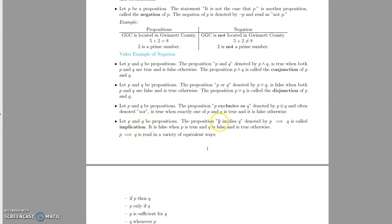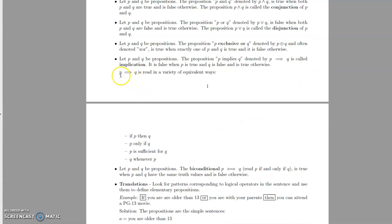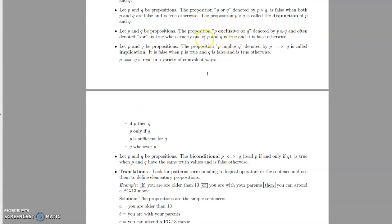The next operator is called the implication, written as 'P implies Q' and denoted with an arrow. P implies Q is only false when P is true and Q is false. There are different ways to write P implies Q in English: 'P implies Q,' 'if P, then Q,' 'P only if Q,' 'P is sufficient for Q,' or 'Q whenever P.'